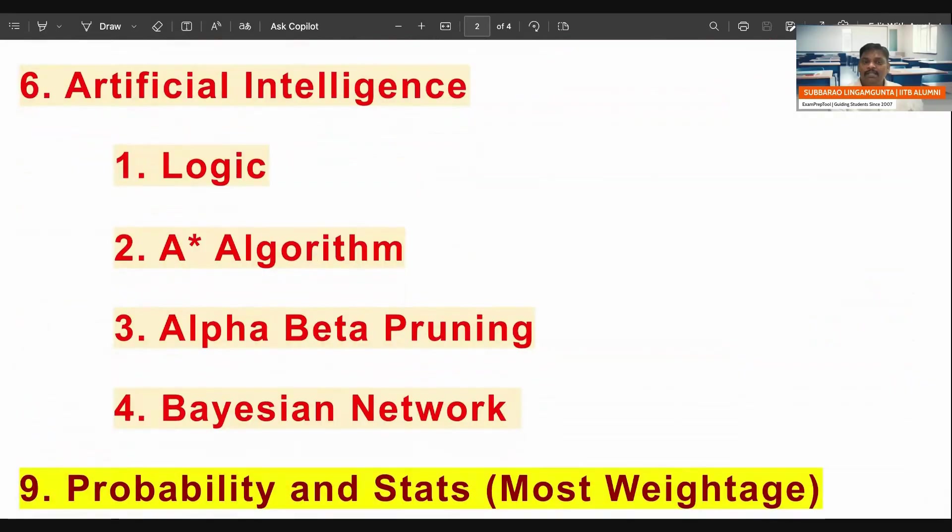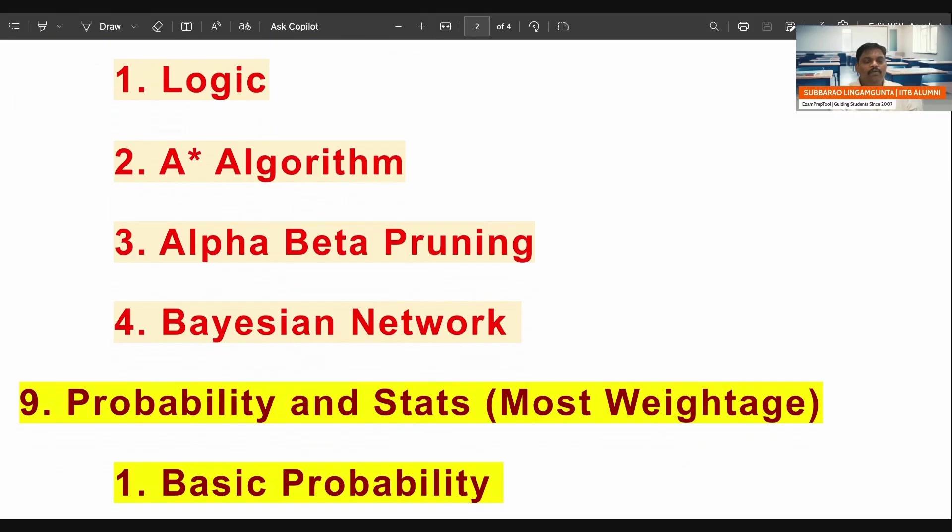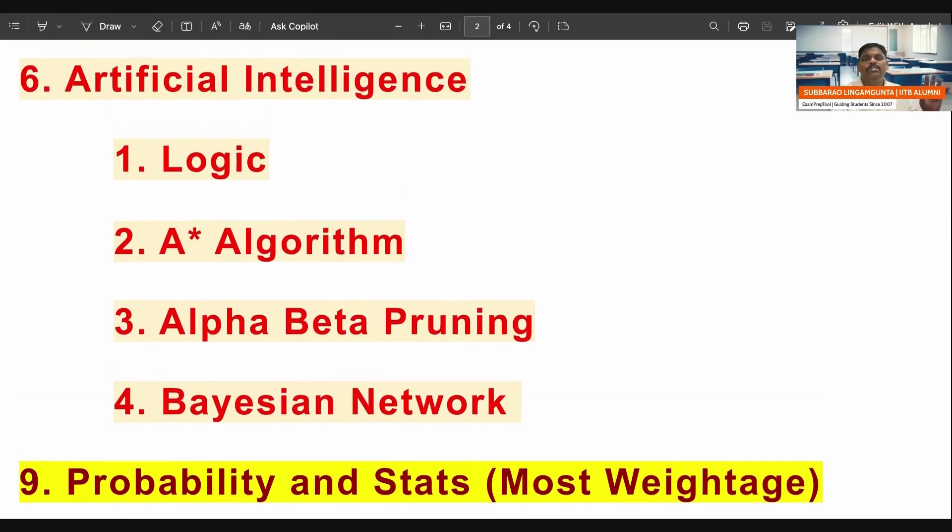Next one, artificial intelligence. Logic is important, which I think we already covered in the graph theory, we already covered in the discrete mathematics. Next one, A-star algorithm, alpha-beta pruning, Bayesian network. These are the very important topics in artificial intelligence.